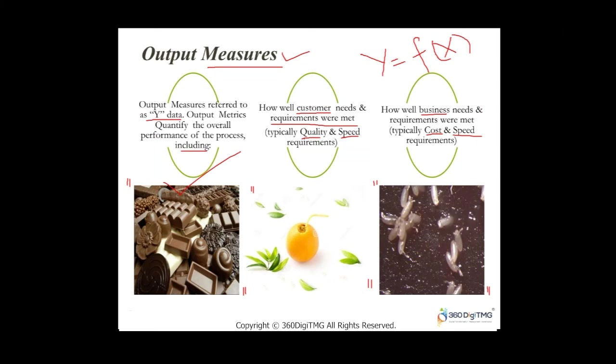You cannot go and sue the chocolate company saying you found a rodent hair. For canned orange juice — which many feel is high quality — five Drosophila eggs per 250 ml of canned citrus juice is permitted. So you need to be very clear on what your measure is.